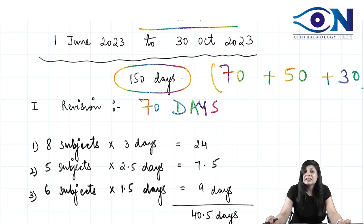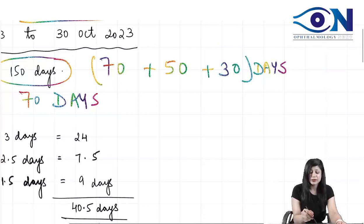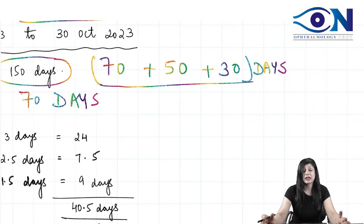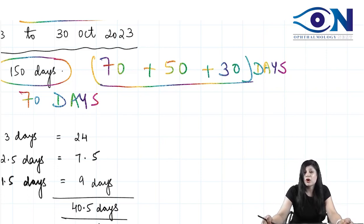If you utilize those 150 days in a fruitful manner, you can create wonders and get the result you were looking for. For this, you have to divide the 150 days very effectively and efficiently. I have divided your 150 days into three parts, and if you do every day whatever I am telling you, these 150 days are going to give you the most desired result.